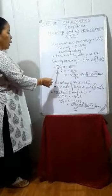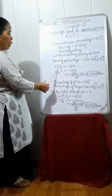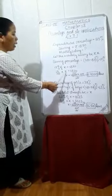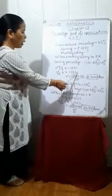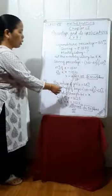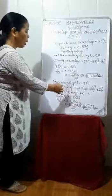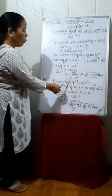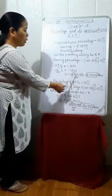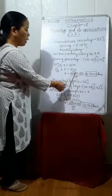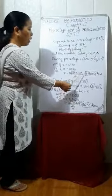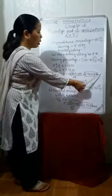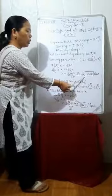17% can be written in fractional form as 17 upon 100, multiplied by X, equals 1870. So X will be equal to 1870 multiplied by 100 divided by 17. If we divide 1870 by 17 we get 110, and 110 multiplied by 100 equals Rs. 11,000. This is the monthly salary of Mr. Khanna.